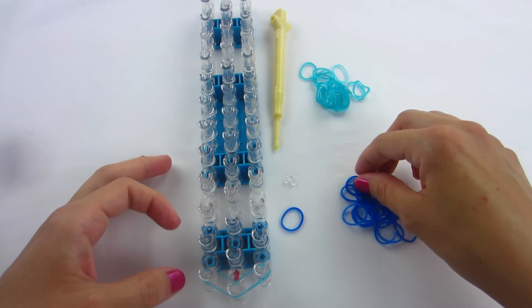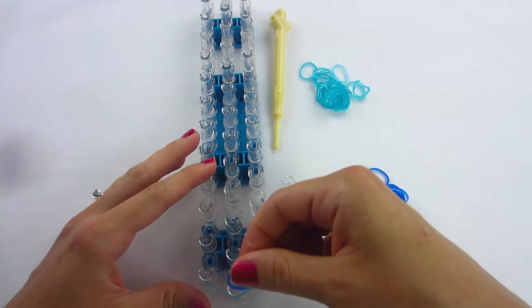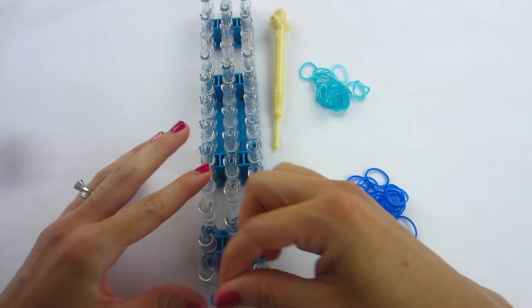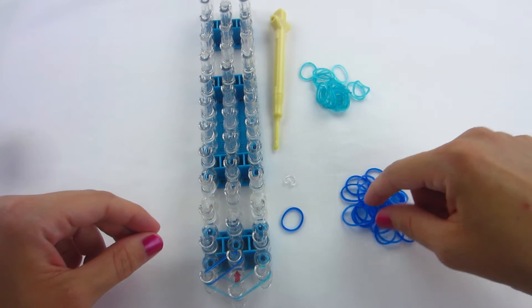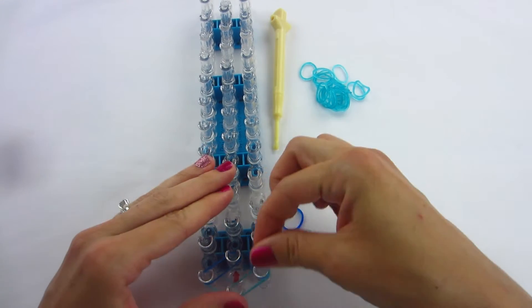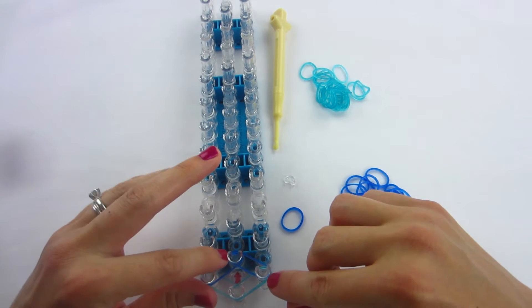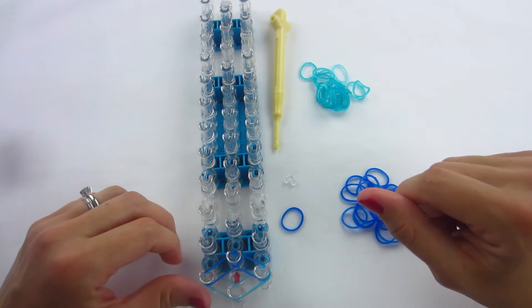Now we are going to take a blue band and go from the bottom left peg up into the right, and then our bottom right peg up into the left into that center, that second middle peg.